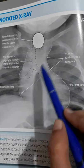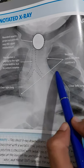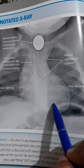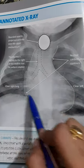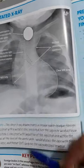Normal cardiothymic contours are seen, and clear left lung and clear right lung are visible.